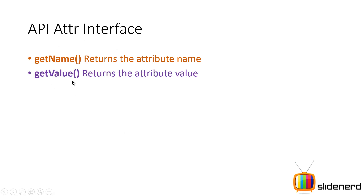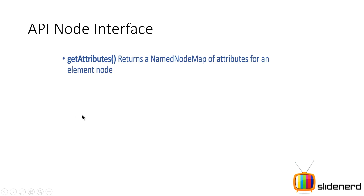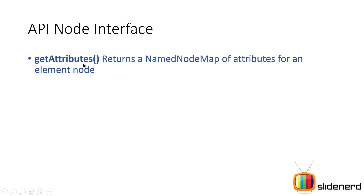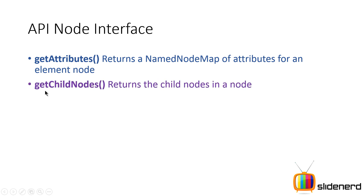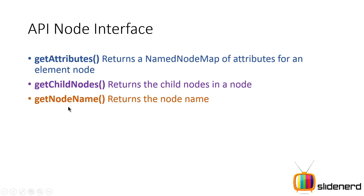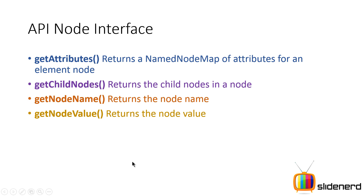Then there's the Node interface, which has getAttributes, getChildNodes which returns the list of children this node may have, getNodeName which gives you the node name, getNodeValue which returns the value of that node, and getNodeType. There are different types of nodes and we'll look at them shortly. Now enough with the APIs and methods — let's look at how we process the document element.